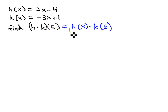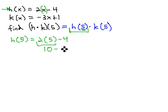Let's find h(5) first. We plug 5 into the h function for every x. h(5) = 2(5) - 4. By order of operations, 2 × 5 = 10, minus 4 gives us 6.